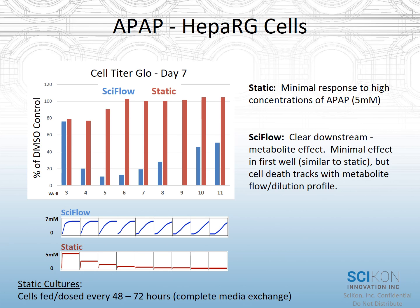To contrast that with our SciFlow data, we do see a similar ~20% decrease at the highest acetaminophen concentration. But then very interestingly, we see decreased viability or higher cell death downstream of that highest concentration. So we're seeing a decrease in viability at lower acetaminophen concentrations, and then the cells recover at the far end of the plate. What we're tracking here is the flow of metabolites. The effects we're seeing in wells four, five, six, and seven are not mediated exclusively by the acetaminophen, but by the metabolites of acetaminophen being generated in the upstream wells and flowing into the downstream wells.